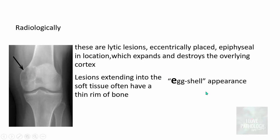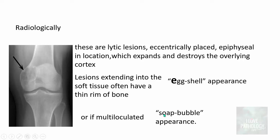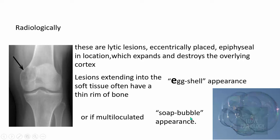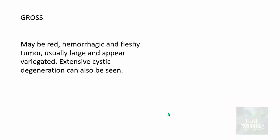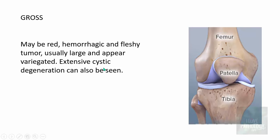If the lesion is multiloculated, it classically resembles a soap bubble and that is called soap bubble appearance. So radiologically, a Giant cell tumor looks like either egg shell appearance or soap bubble appearance. Grossly, they may be red because they are hemorrhagic and fleshy tumors. They are usually large and appear variegated — meaning different colors and appearances on a given cut section — with extensive cystic degeneration visible on the cut surface.